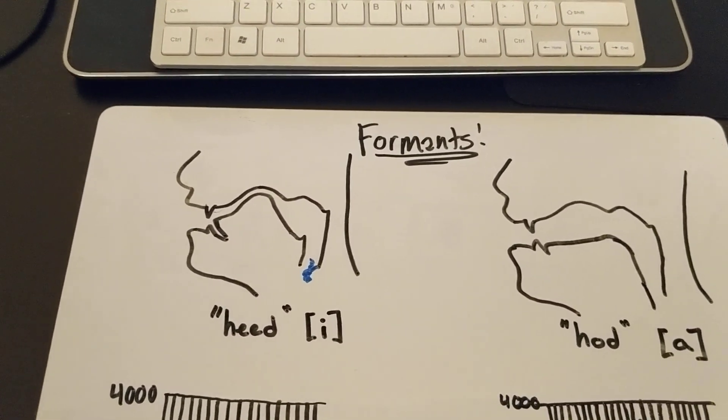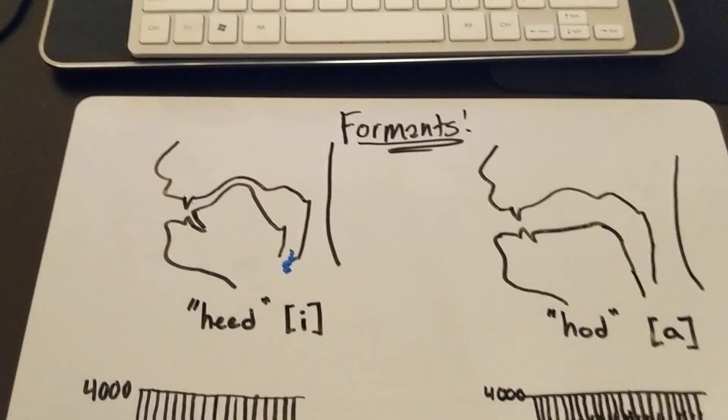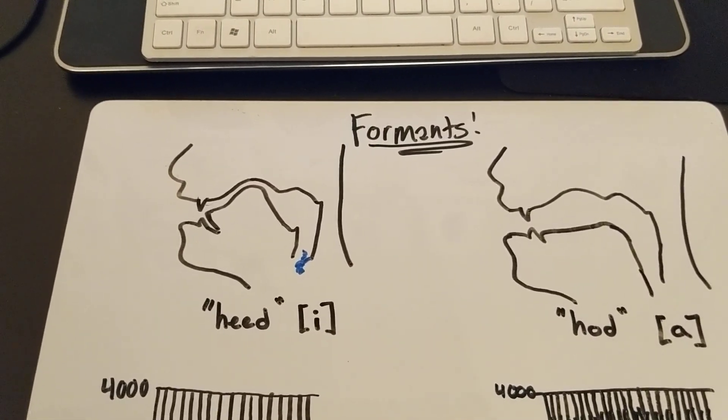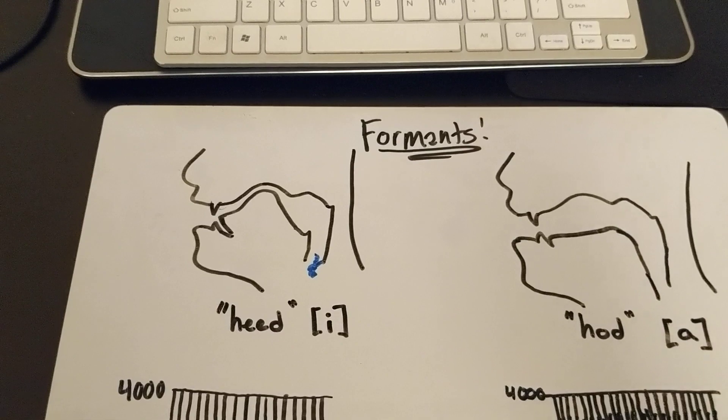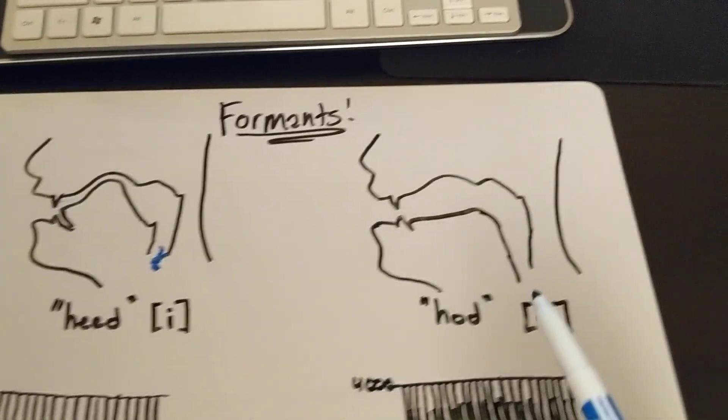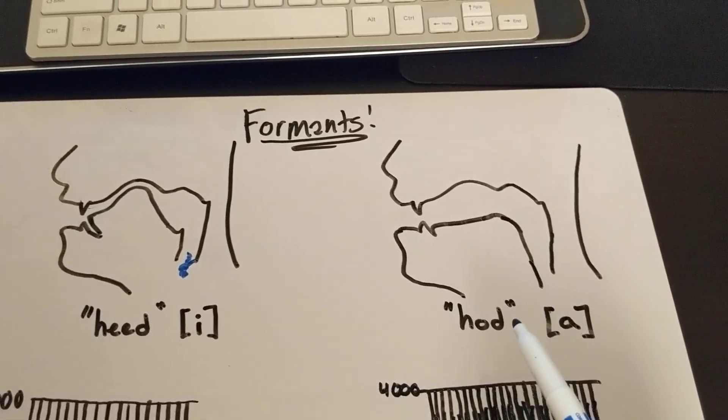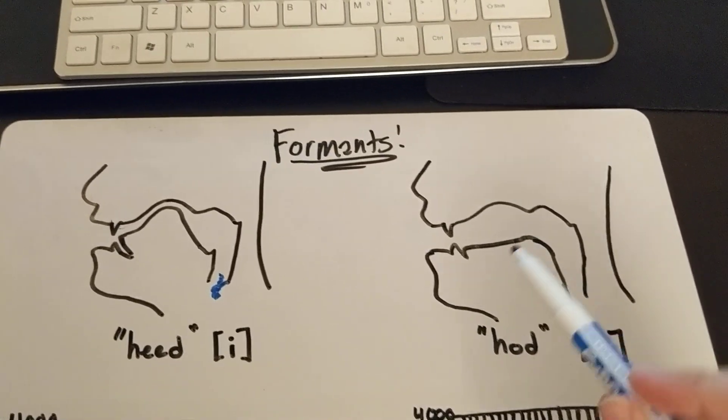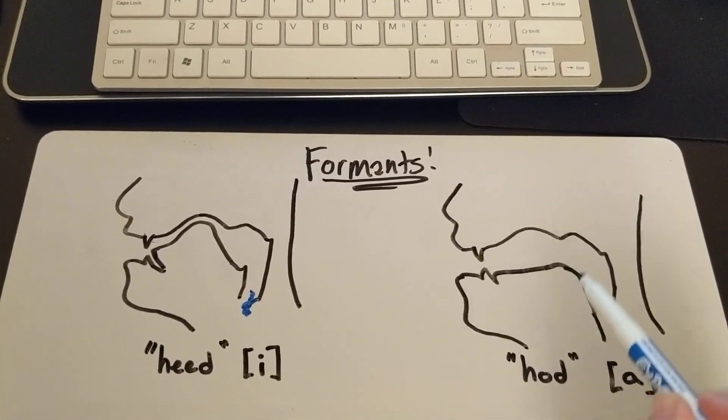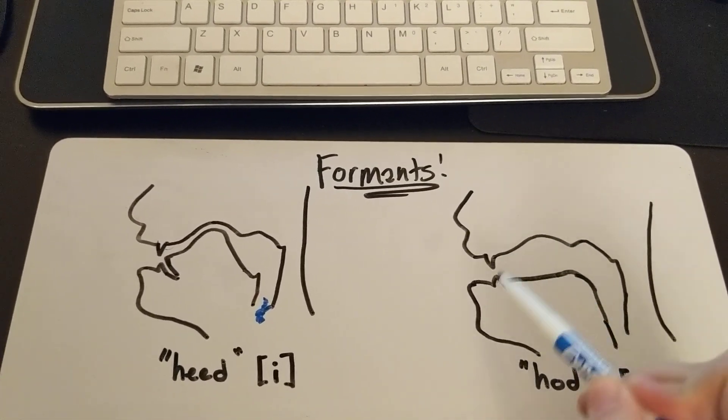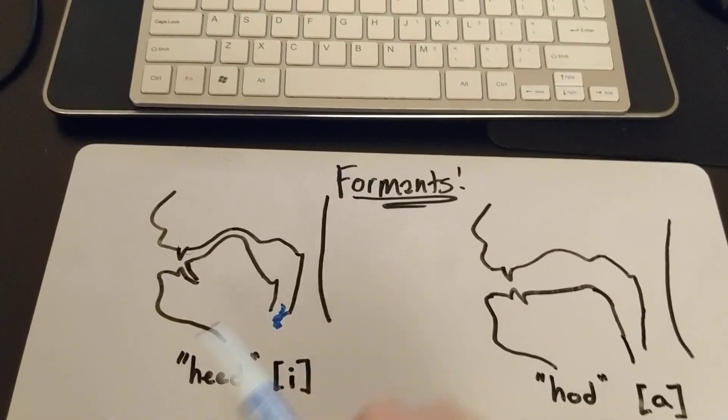Just like when you yell in a parking garage, it sounds different than when you yell down a very narrow tunnel or something like that. The vowel heed is going to sound very different from the vowel hod because of the different configuration, right? The echoing is going to work differently in this vowel than in this vowel.